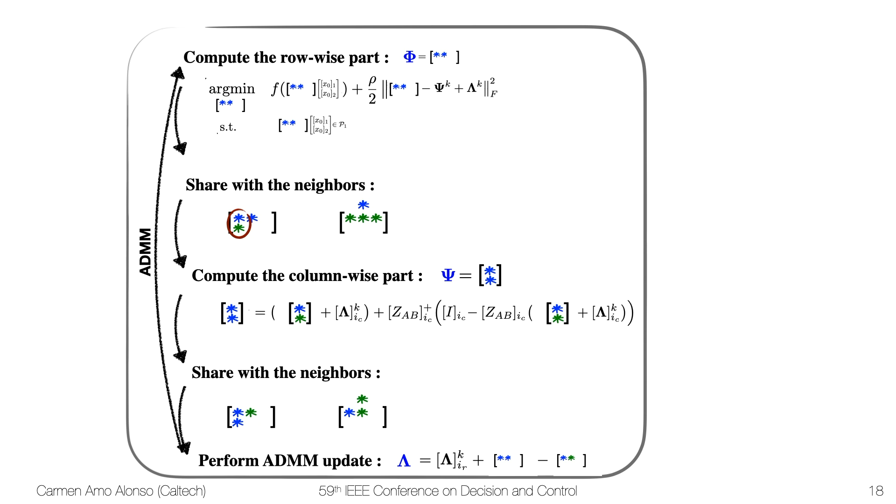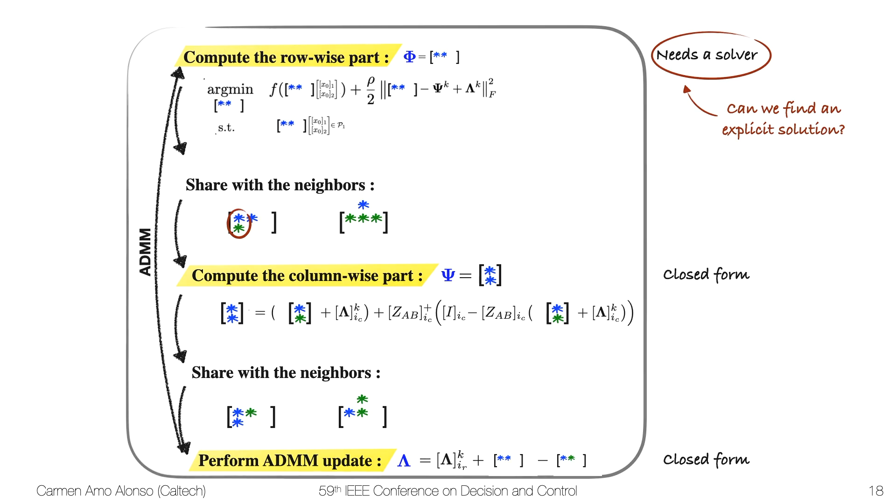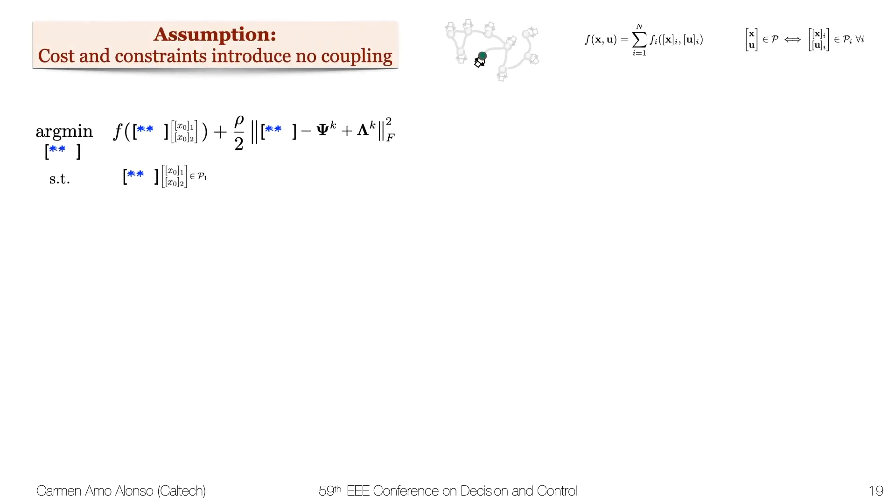So now let's study the complexity of these computational steps, because even though they are of small dimension, we still have some room for improvement. And as you can see, the last two computational steps can be solved in closed form, but the first one needs a solver. And so the question for us was, can we find an explicit solution to solve this optimization problem explicitly?